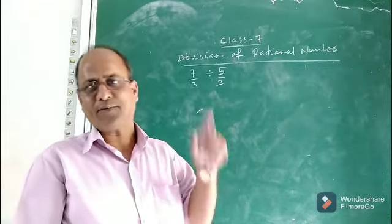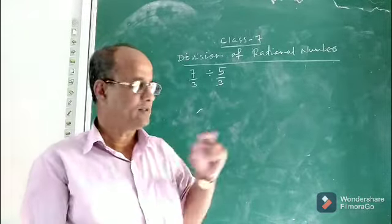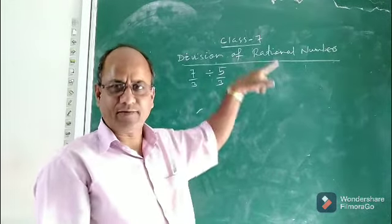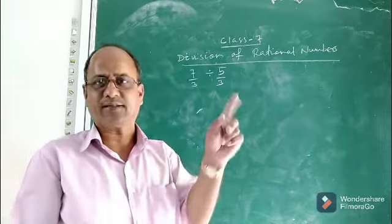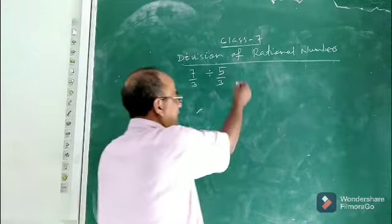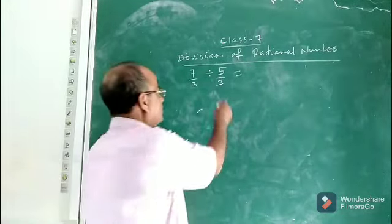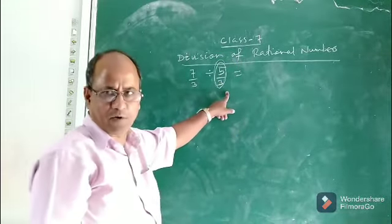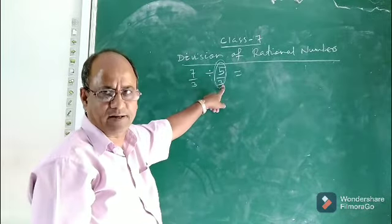If you recall the process of division of two fractions from Class 5, you can easily apply the same thing here — how we divided two fractions. In a similar manner, we will divide one rational number by another. The process is: take the reciprocal of the second fraction or second rational number. Take the reciprocal of 5 by 3.